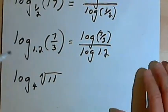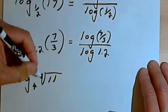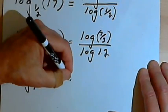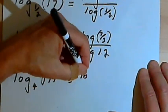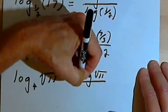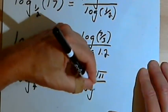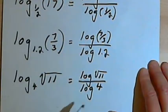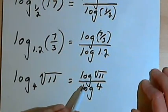The last one I've got is the log base 4 of the square root of 11. So that's just going to become the log of the square root of 11 over the log of 4. And the calculator could handle that as well.